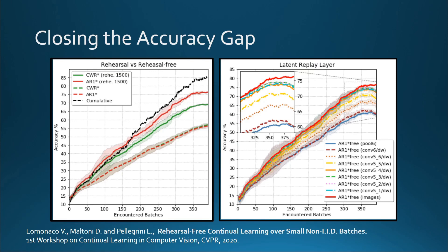While pure replay obtains excellent results, it has several drawbacks unacceptable for robotic and embedded systems. So in this work we propose AR1*3, an even higher version of AR1*, using our proposed latent replay mechanism. On the right, you can see the results on the proposed scenario when choosing different replay layers on MobileNet version 1. There is a consistent accuracy progression — moving the latent layer nearer the input gives higher accuracies. Placing the latent replay layer in the higher part of the model gives the worst accuracy results. For instance, picking the pooling layer just below the last fully connected layer gives the result shown as the blue line, which is the worst result.